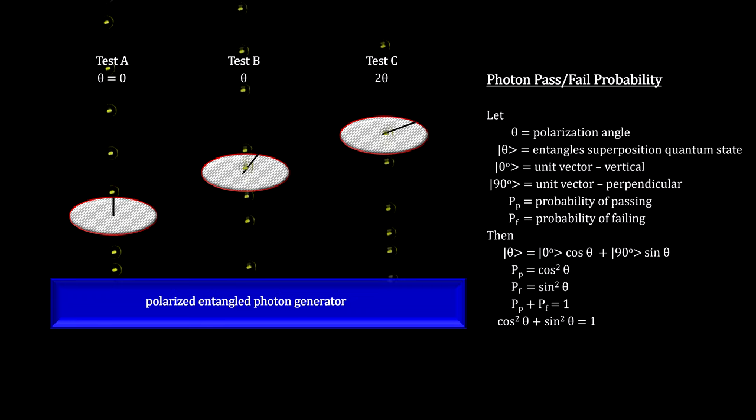The thought experiment used tests in three particular combinations. One was to run a photon through test A, followed by running its entangled photon through test B. The second was to run a photon through test B, followed by running its entangled photon through test C. And the third was to run a photon through test A, followed by running its entangled photon through test C.